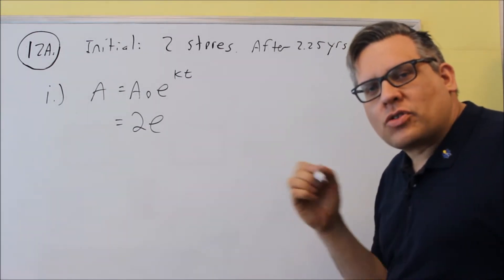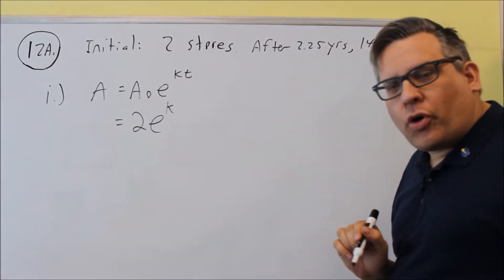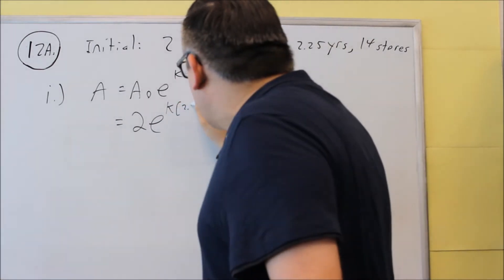Now k is what we're going to solve for. We want to solve for the growth constant, so we don't know what that one is. And the time they give us is 2.25 years.